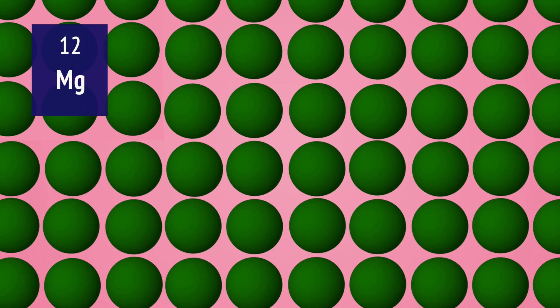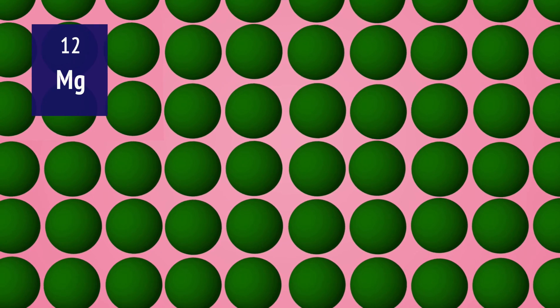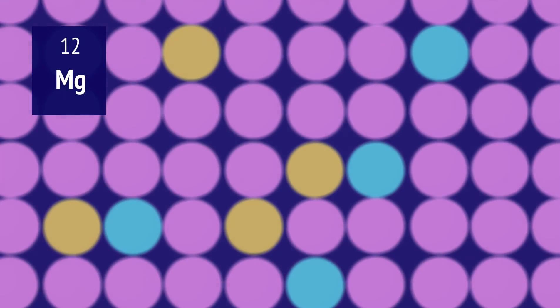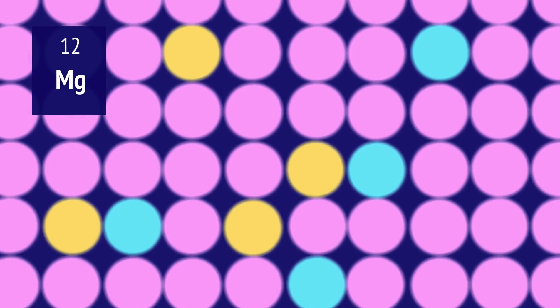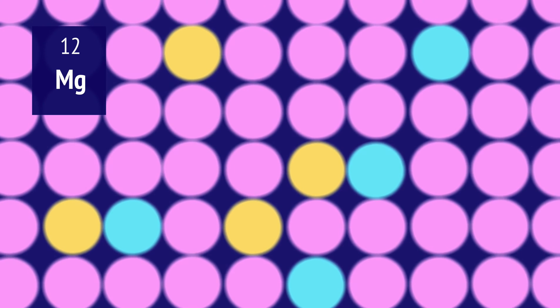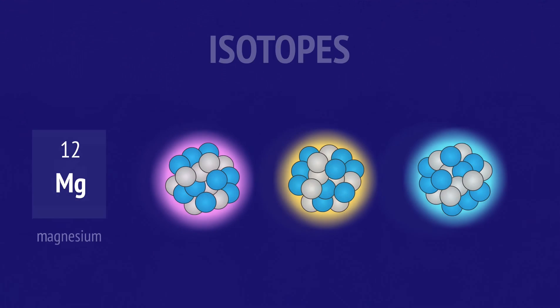While all magnesium atoms have 12 protons in the nucleus, they're not all the same. When we look even closer, we discover different types of magnesium atoms with different numbers of neutrons, and this gives them a different mass. We call these isotopes.